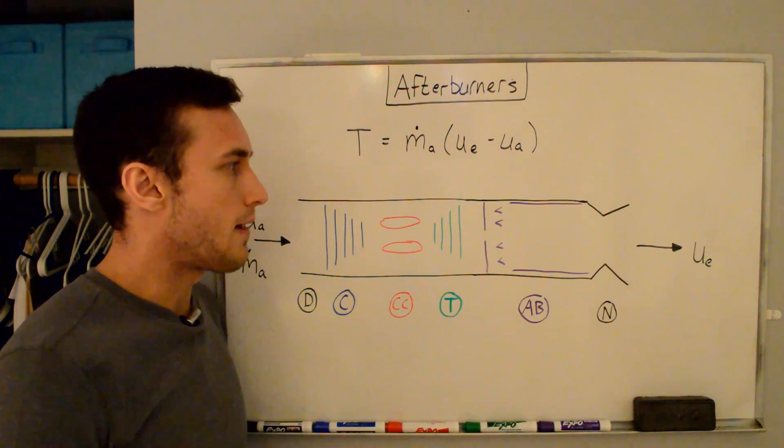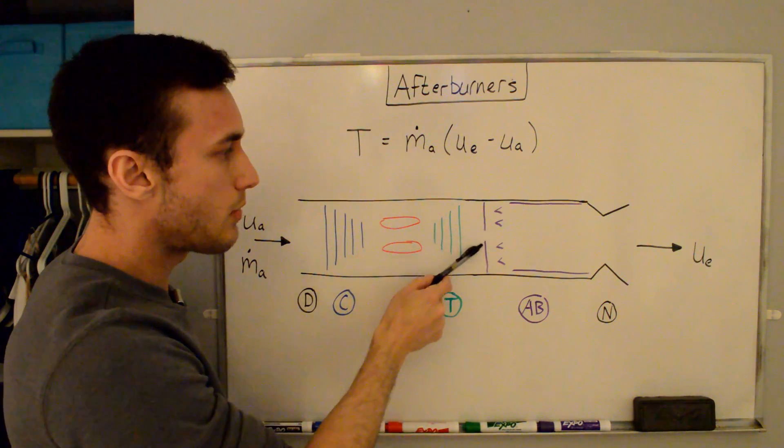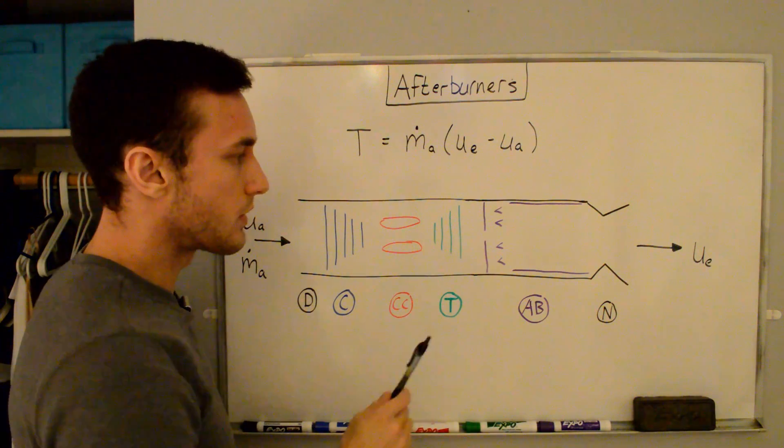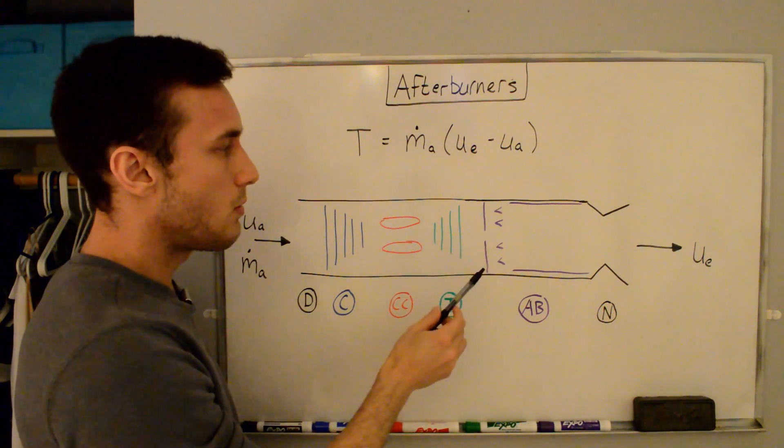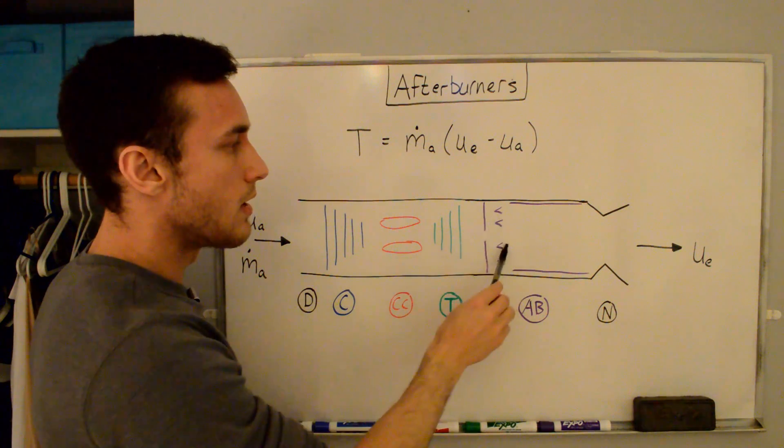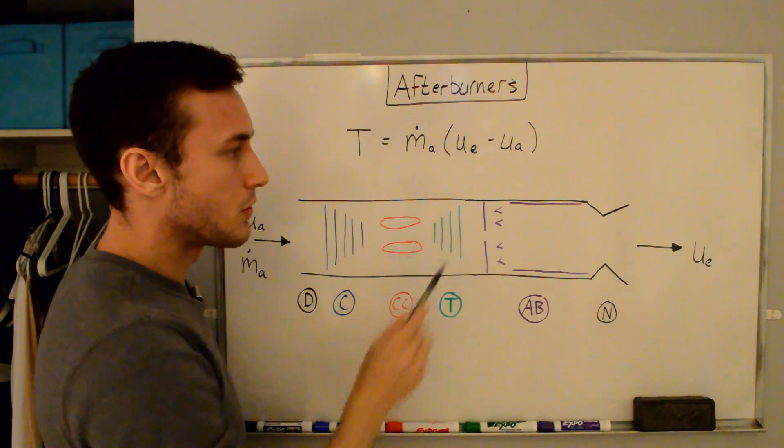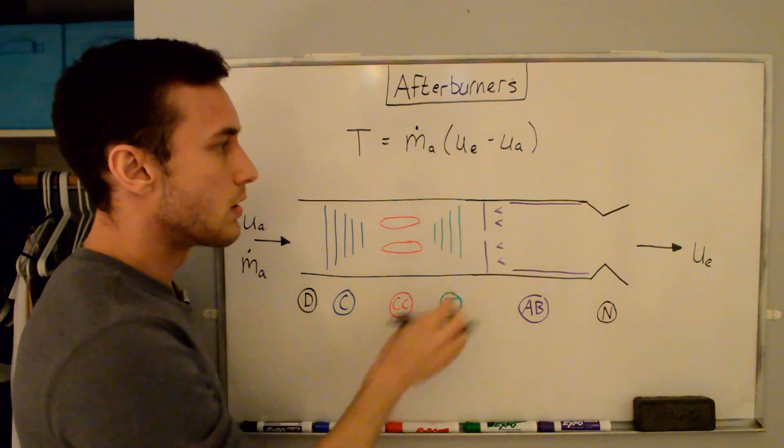So now let's just briefly describe what the components of the afterburner are. If we look at the exhaust gases coming out of the turbine here, we have these spray bars, where we have fuel precisely metered through these spray bars into the exhaust gases, and then what we can do is we can ignite it and then set up these recirculation zones here behind these bluff bodies, also called flame holders or v-gutters, and this helps to keep the incoming fuel air mixture ignited.